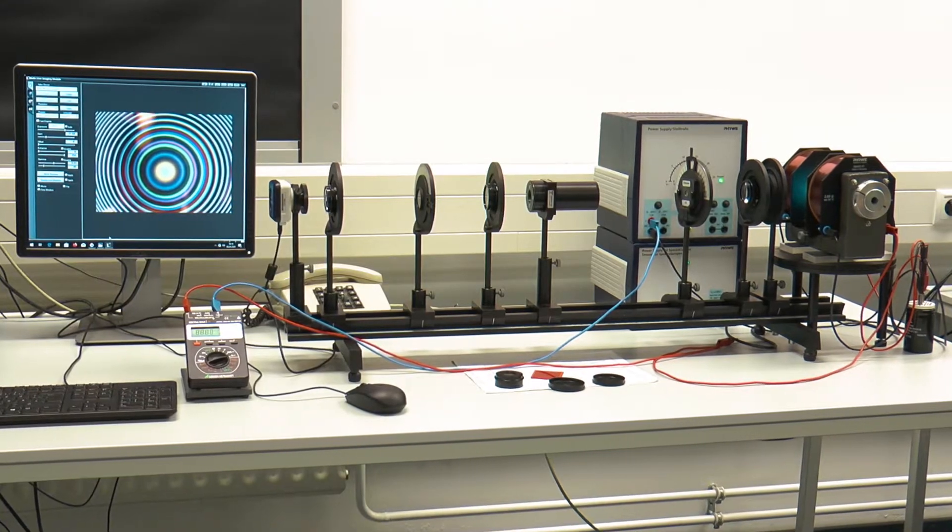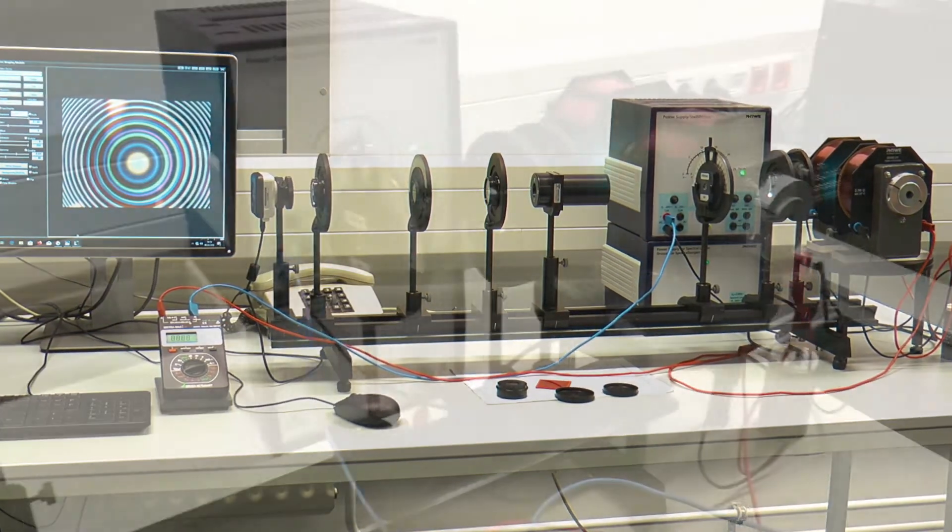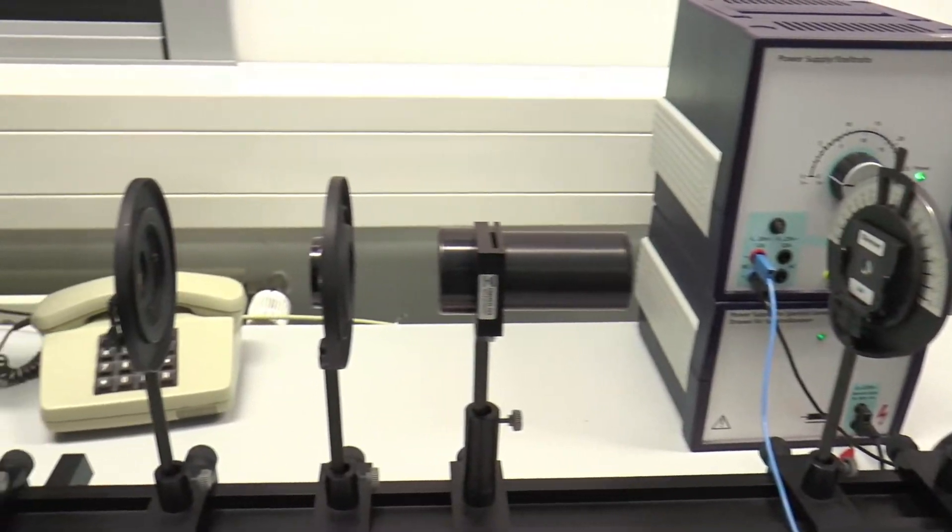Various experiments show evidence of a property of electrons that goes beyond charge and mass, which is called the intrinsic angular momentum or spin.